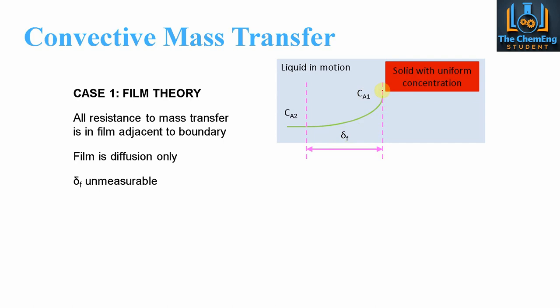The film thickness sigma_f is unmeasurable because it is very small, highly randomised, and changes depending on the type of system and operating conditions. For example, an increase in temperature will increase the rate of mass transfer. Similarly, changing the pressure can affect the system depending on whether we have compressible or incompressible fluids, which can get very complex. These details are covered in our mass transfer course and thermodynamics course — links will be in the description.